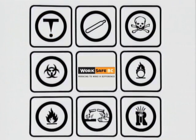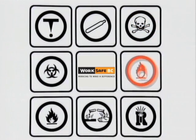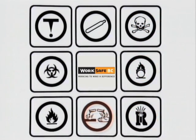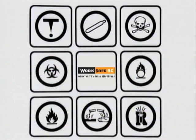The manufacturer must classify the chemical according to the type of hazard it presents and display the symbol clearly. You need to recognize these symbols as quickly and easily as you recognize your own children.